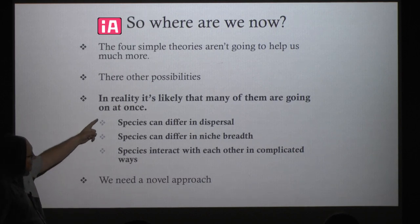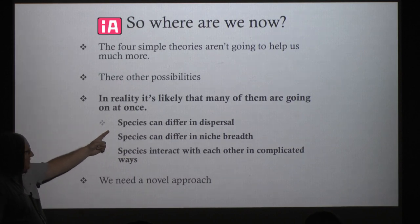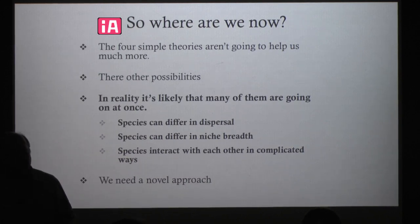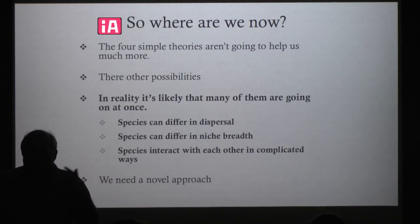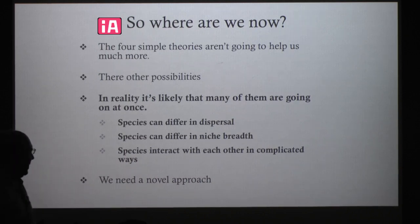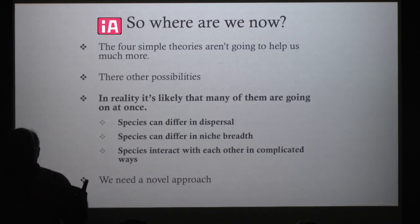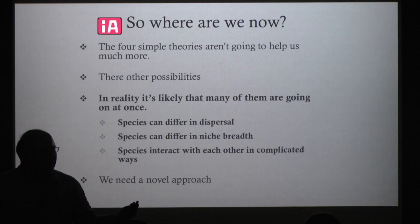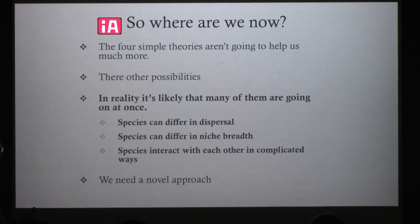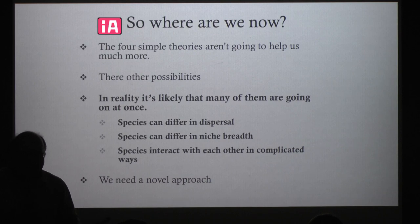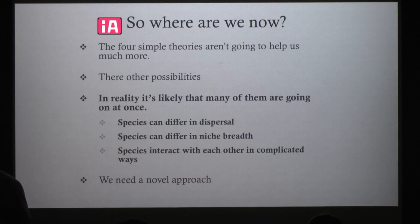What's important to realize is that these were cartoons of how species interact. In fact, probably in any given metacommunity, we have a combination of those ideas. Even though there might be environmental differences, there's probably also variation in dispersal. Some species might show narrow environmental affinities while others are habitat generalists, and these species might interact with each other in complicated ways. How can we get away from these idealized-situation cartoons into a more realistic, comprehensive framework?